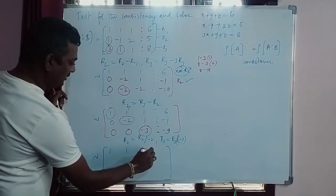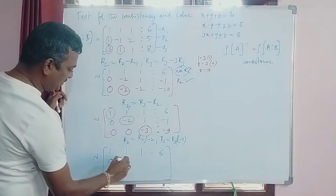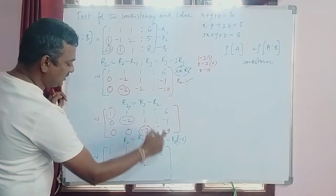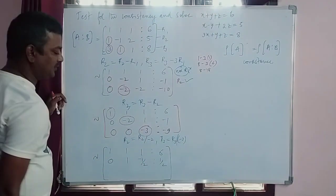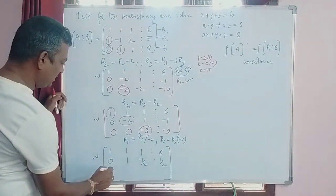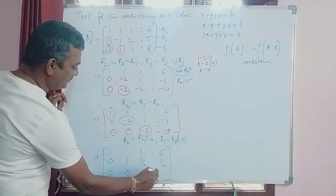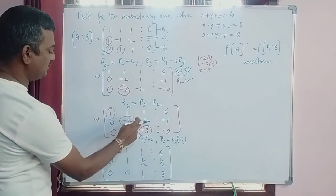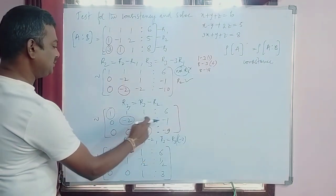So this is 1, 1, 1, 6. This is 0, -2 by -2 is 1, 1 by -2 is -1/2, -1 by -2 is 1/2. So this is 0, 0, this is 1, this is 3.